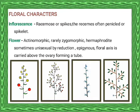Floral characters of Combretaceae: inflorescence — racemose or spikes; the raceme often paniculate or spikelet. Here we can see four different types of inflorescence. First image: the racemose type. In this type the main axis is continuously growing and does not convert into a flower. The older flower is located at the base and younger flower at the apex, grown in acropetal succession.